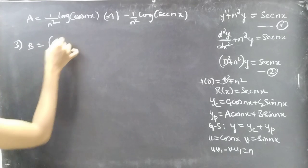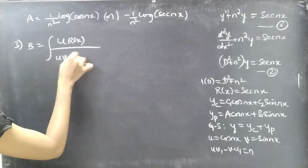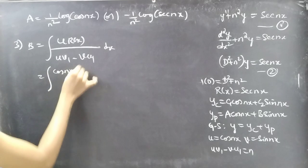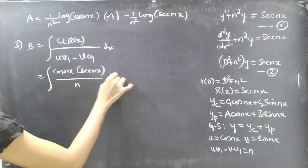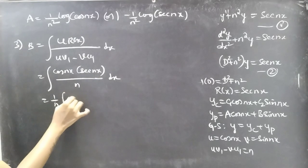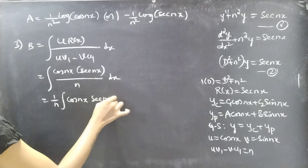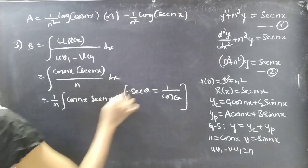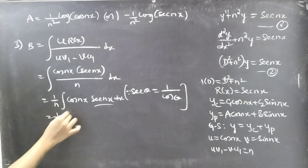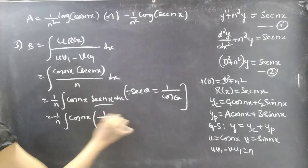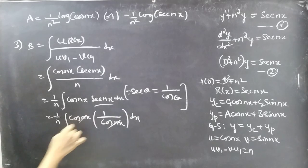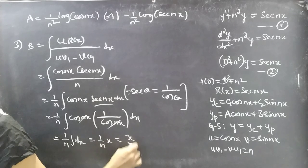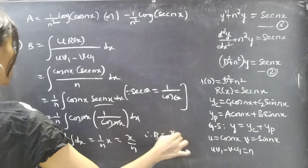Now finding B: B = ∫(u·R(x))/(uv' - vu') dx = ∫(cos(nx)·sec(nx))/n dx = (1/n)∫cos(nx)·(1/cos(nx)) dx = (1/n)∫dx = (1/n)·x = x/n. Therefore B = x/n.